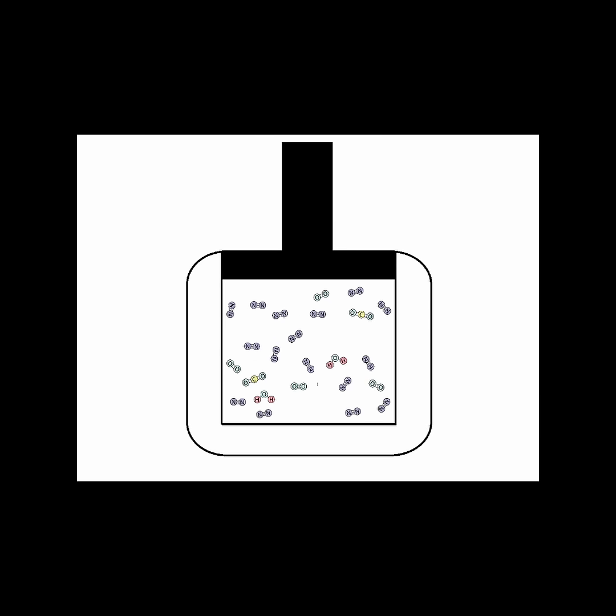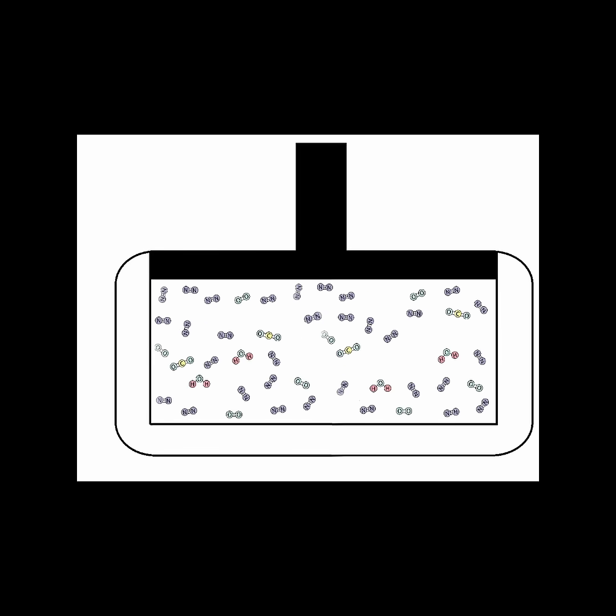Imagine if we increased the surface area of the piston but kept the number of molecules per volume the same. This would result in an increase in the number of collisions against the piston. More collisions over a larger area means an overall increase in the force against the piston. Thus, force is proportional to the area where pressure is applied.